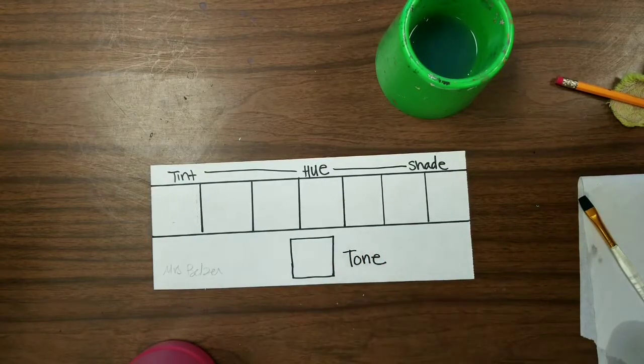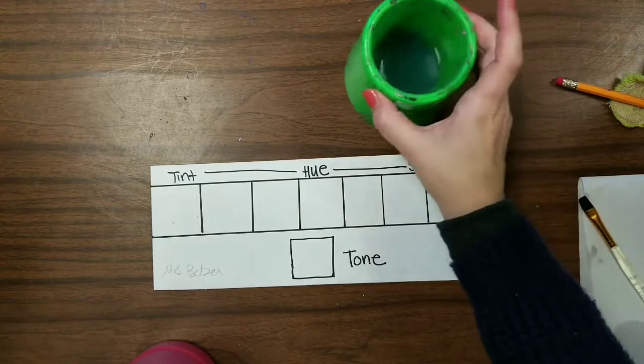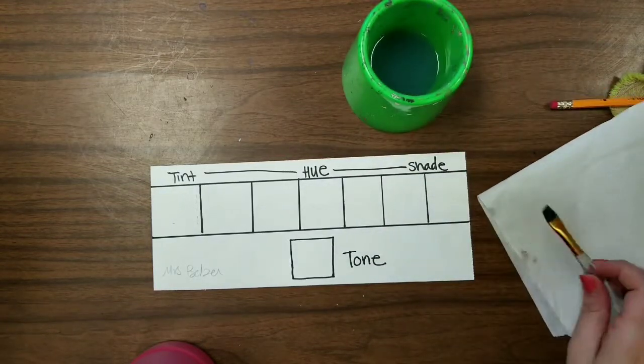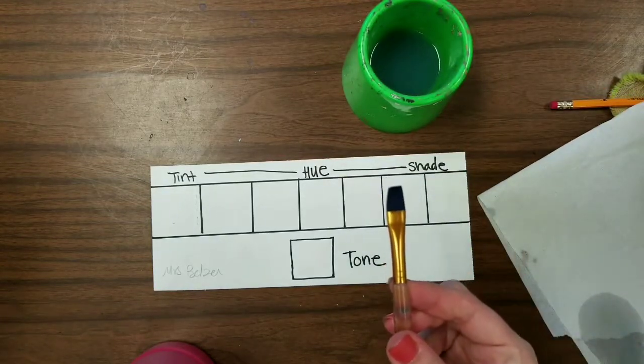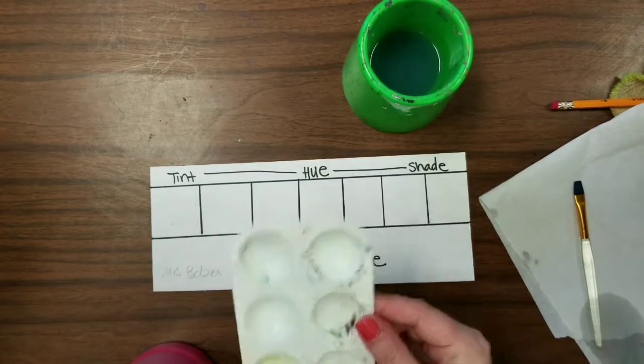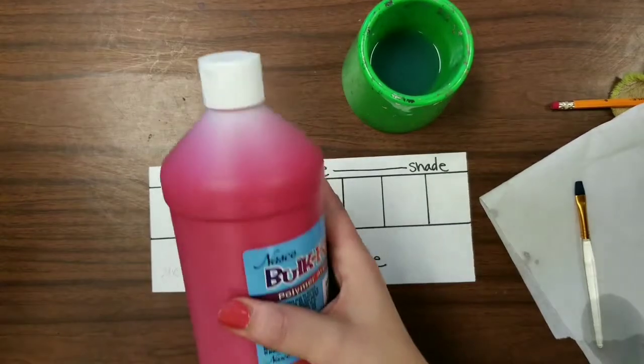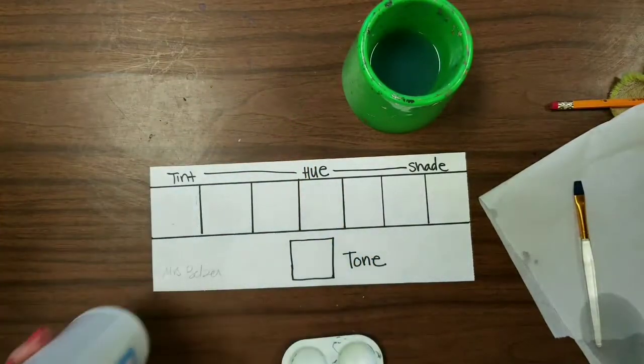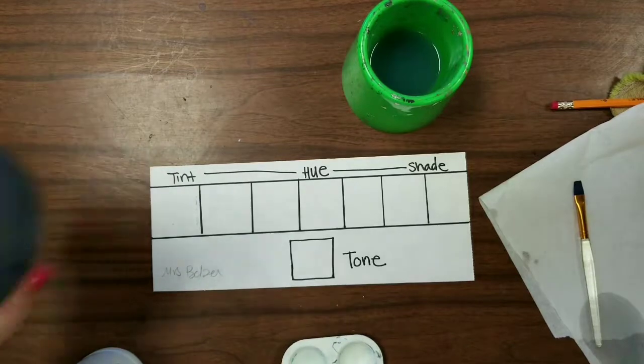After you're done tracing, you'll get your painting supplies out, which will be a cup of water, paper towel, and a brush. I'm using the square brush. And you'll need a paint tray, your hue or whatever color you're going to use, white and black paint.